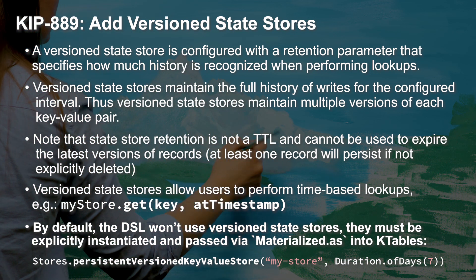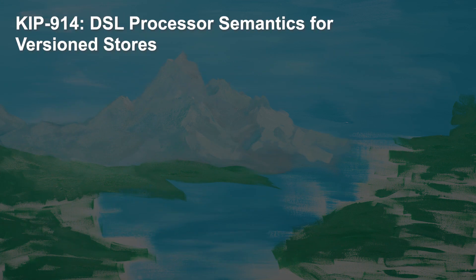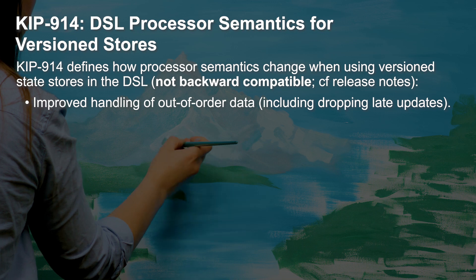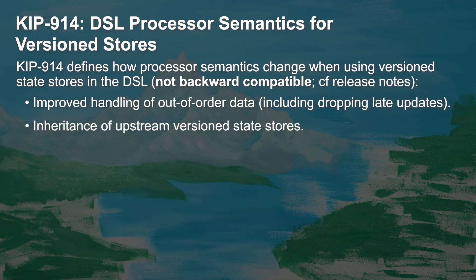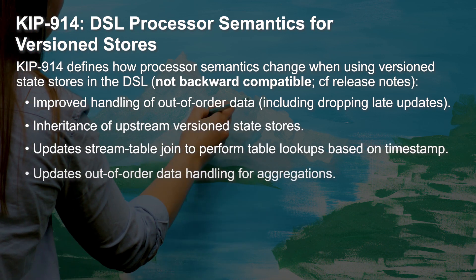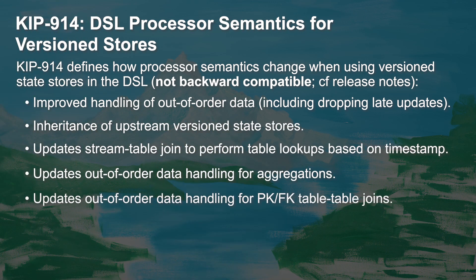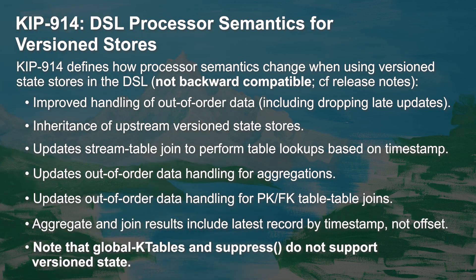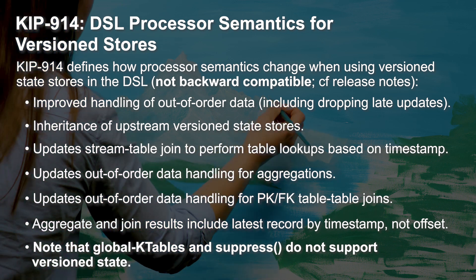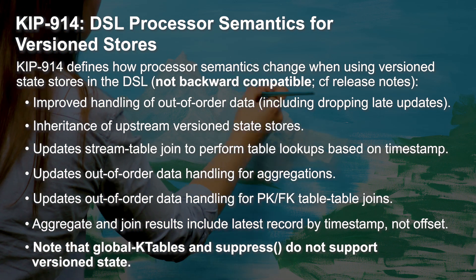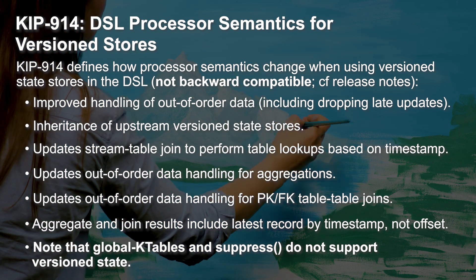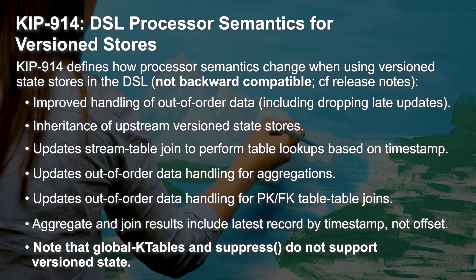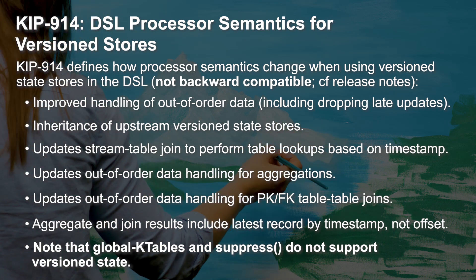So we have to give KIP 889 a friend — let's introduce KIP 914. KIP 914 doesn't make any changes to public interfaces to recognize versioned state stores, but it does affect how versioned state stores are handled behind the scenes. By default, the Streams DSL won't use versioned state stores. You'll have to explicitly instantiate and pass them via materialized.as into KTables. Versioned state stores may affect each of the DSL processors in different ways, so check the docs for more details.